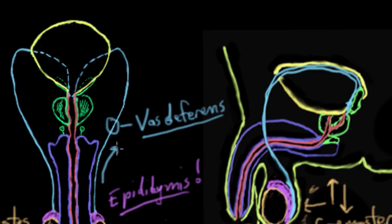The vas deferens actually drains the epididymis of sperm and brings the sperm upwards behind the bladder and into the urethra, which is the next part of the reproductive tract. Now the vas deferens actually runs within a bundle called the spermatic cord.